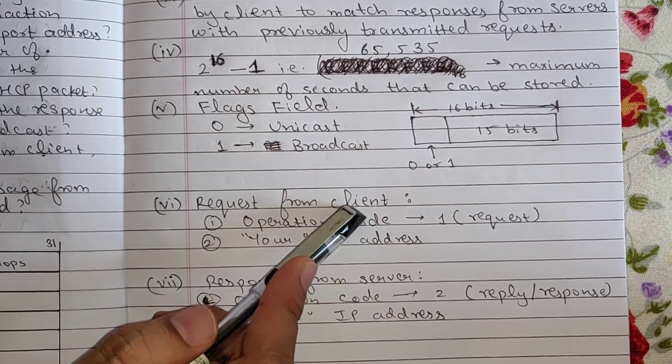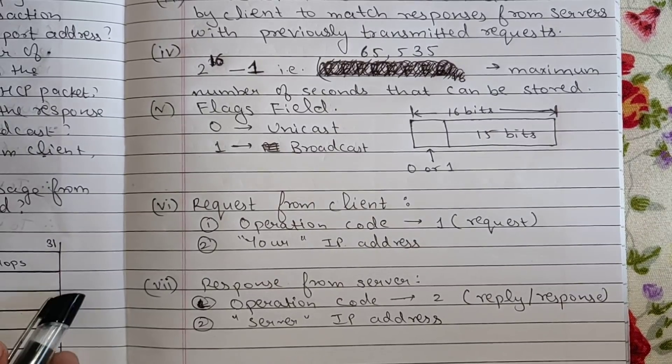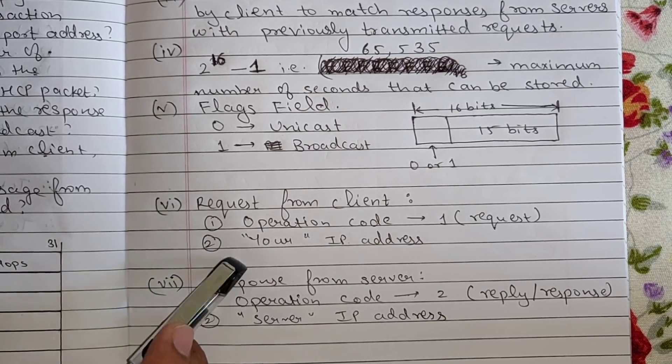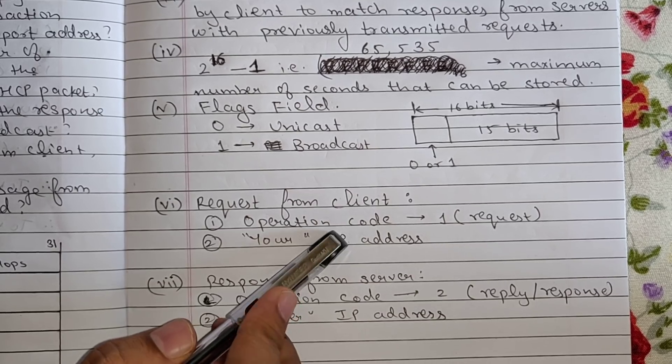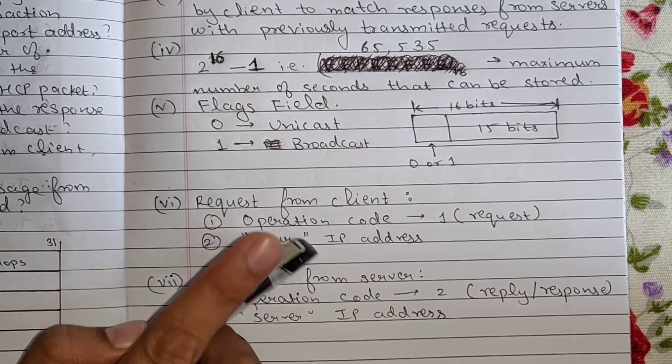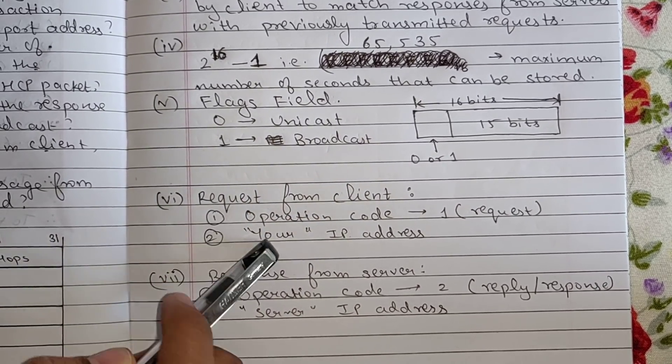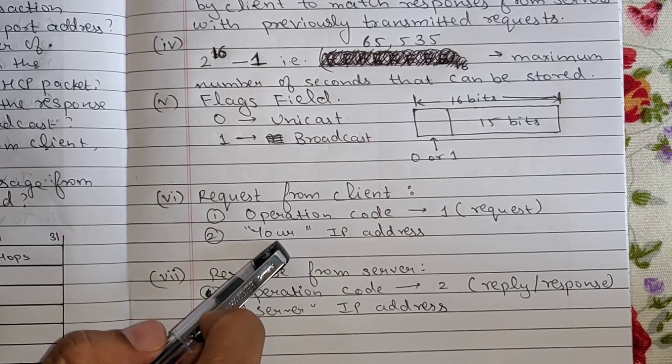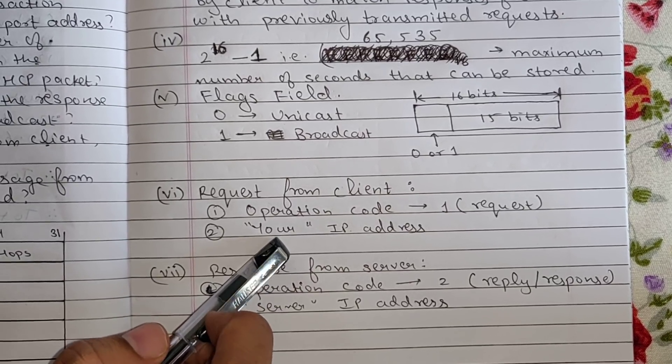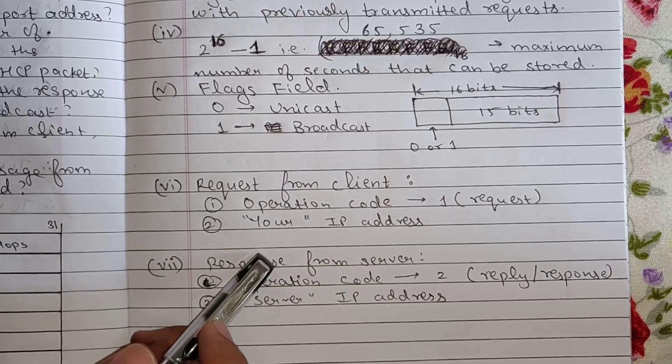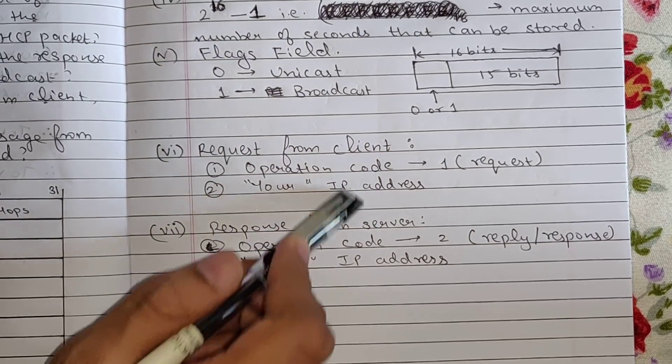So if it is a request from client, client here means we, okay. So if it's a request by us then first the operation code needs to be request, that means it needs to be 1. Next we need to also give your IP address, that is my IP address. Other fields will also be used but then these are the two major things.